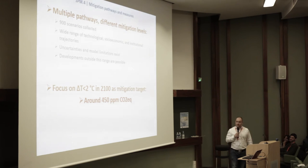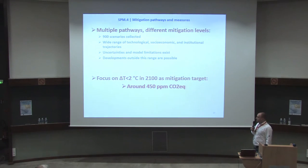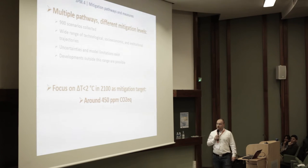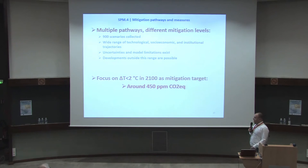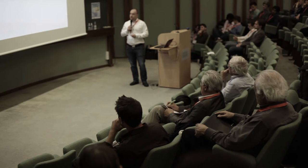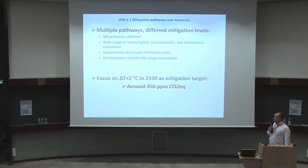The IPCC Working Group 3 Subcommittee for Mitigation — which is a separate report — collected 900 scenarios concerning multiple pathways for mitigation. We will focus on the 2-degree maximum warming, which is now unfortunately unrealistic, but which would prevent major damage. This 2-degree maximum average temperature change over the next century means we need to reach around 450 ppm CO2-equivalent concentration. There is a wide range of technological, socio-economic, and institutional trajectories discussed in these 900 scenarios.